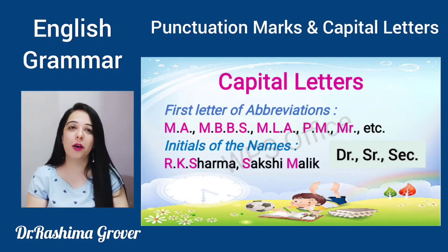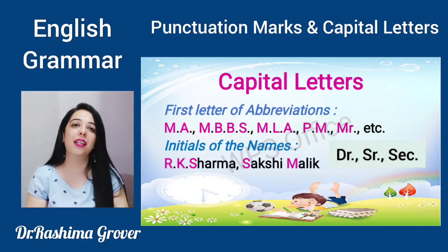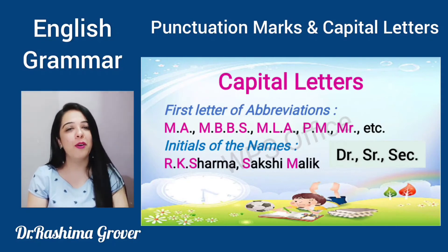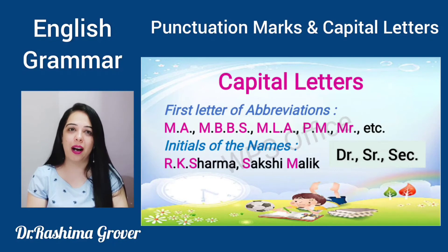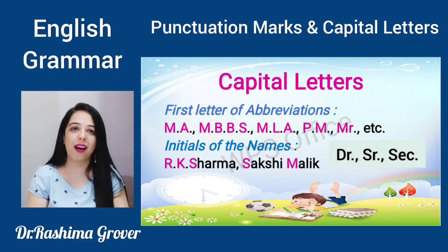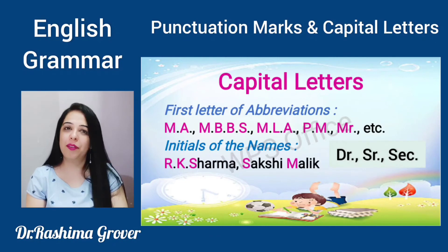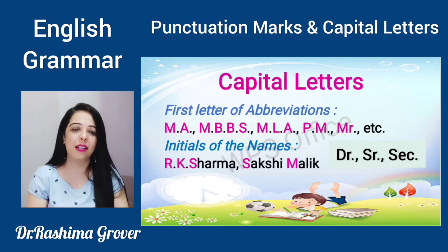Next, initials of names. Jaise humne abbreviations ke first letters ko capital likha, isi tarah se initials mein bhi — for example, R. K. Sharma. This can be Ram Kumar Sharma. Toh Ram ka R capital likhenge, Kumar ka K capital likhenge, aur Sharma ka S capital likhenge. Similarly, if we write Sakshi Malik, toh Sakshi ka S capital aur Malik ka M capital likhna hoga.